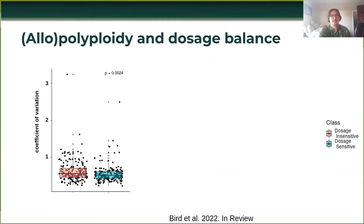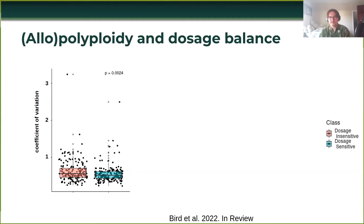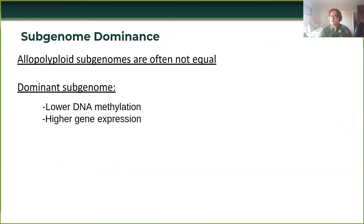Then the idea is to look at the full change in expression of the polyploid compared to the mid-parent and calculate the coefficient of variation for that. On the y-axis, we're looking at the coefficient of variation — how variable the response is among genes within a GO term. GO terms are represented by the black dots, and the colored boxes are the different gene ontology classes: in red, the dosage-insensitive ones, and in blue, the dosage-sensitive ones. The first finding is that, as predicted by the gene balance hypothesis, genes that are purportedly dosage-sensitive have a more coordinated expression response — there's less variance in how these genes are expressed after polyploidy. We have more or less replicated the results of Song et al. in a different scenario with allopolyploidy, showing that this response to duplication is a fairly general phenomenon.